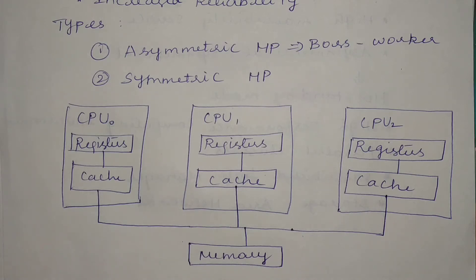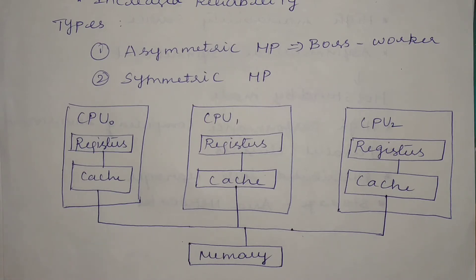Hello everyone. In this video we will discuss the main difference between symmetric and asymmetric multiprocessing. Under computer system architecture, the computer system is gradually divided into two major types: single processor system and multiprocessor system.